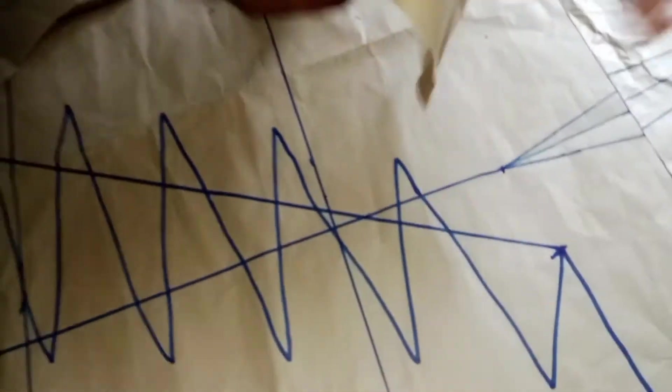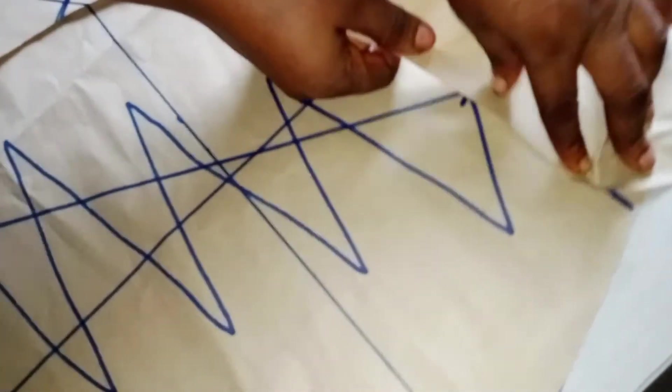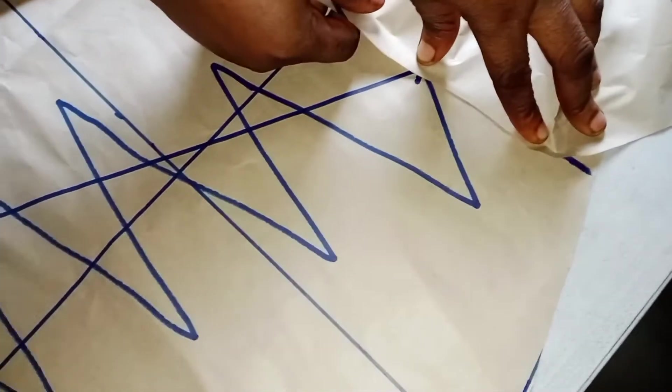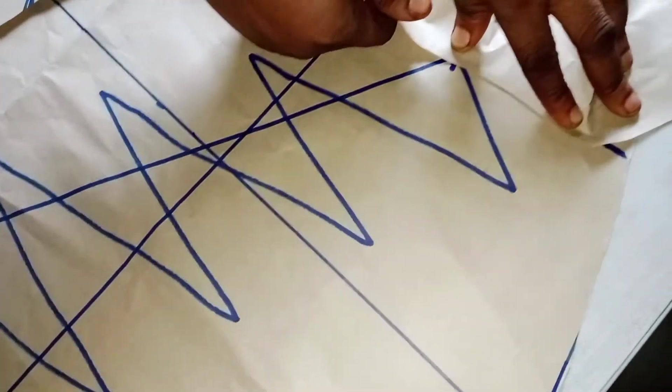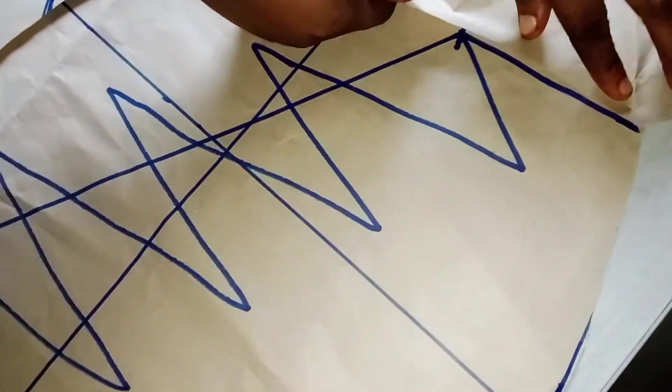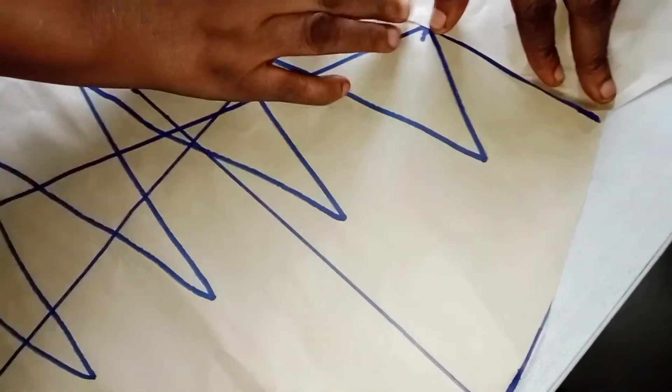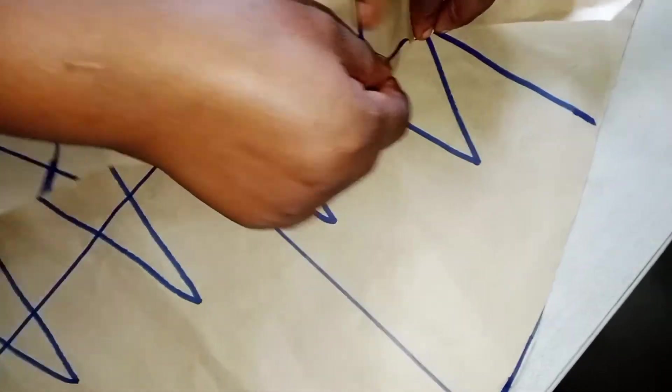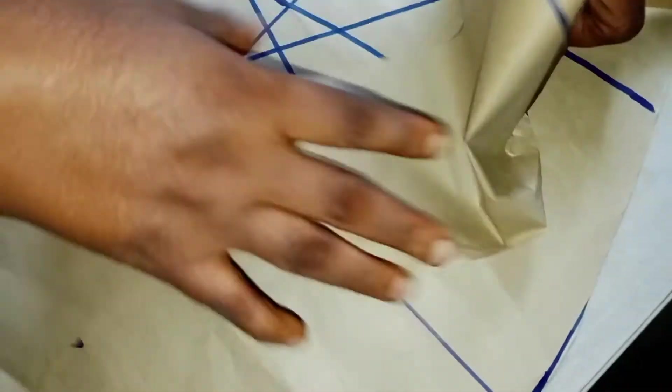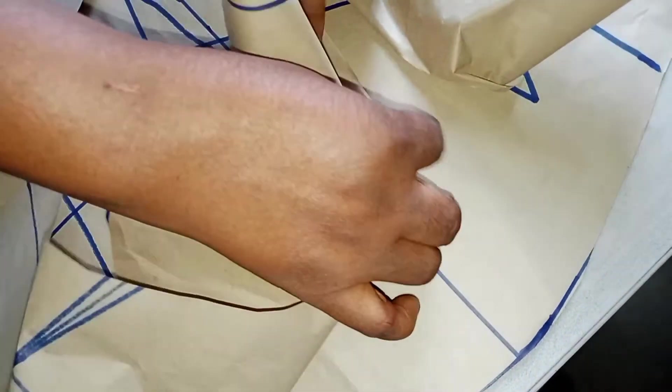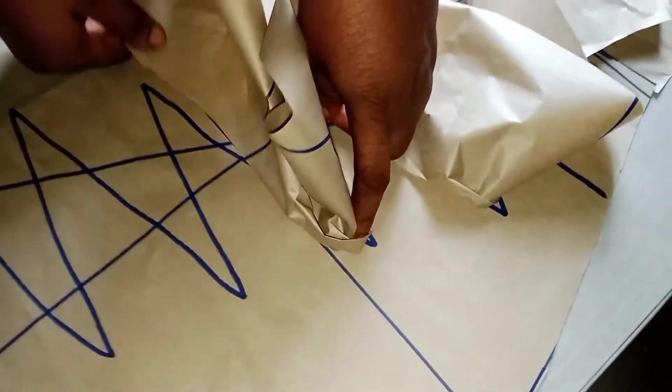Place it this way. As I said, it can be gathered, or you can leave it this way—it will still have the flounce. Start from here and place it this way. Go like this, come like this. Place it in a zigzag way.